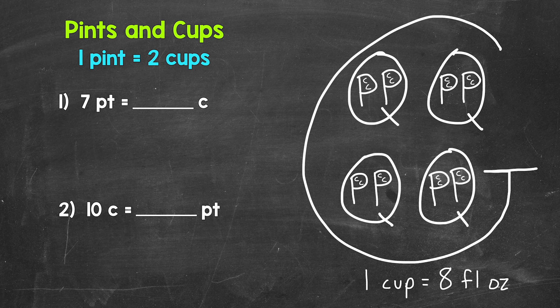To start, there are two cups in a pint. In other words, one pint equals two cups. And I have a big G over here representing a gallon to help us with capacity conversions. And we can see that in each pint, there are two cups. So one pint equals two cups.